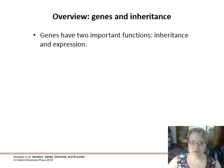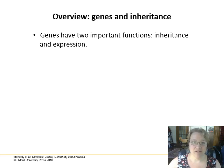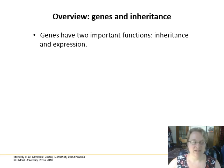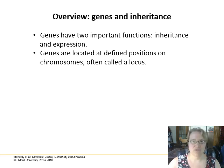So kind of an overview here. Since I'm not going to assume that GenBio is sticking too hard, let's review. Genes have two important functions. Key one is that they're inherited — passed down from parent to child — and then they are expressed. The gene actually codes for something that contributes to a phenotype. Genes are sections of DNA located at a defined position on a chromosome, called the locus, plural loci.